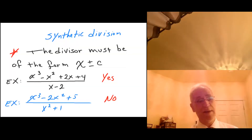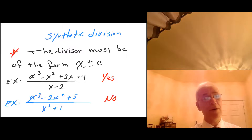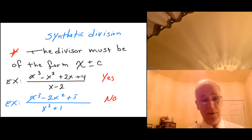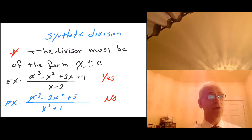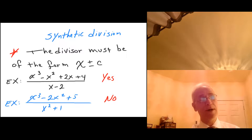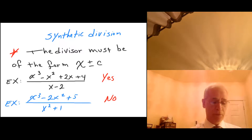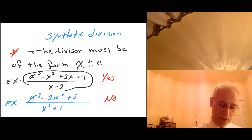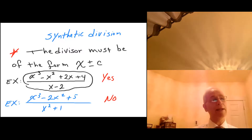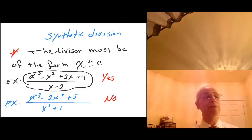Hello, I'm going to be talking about synthetic division, which is a form of long division. What we must remember for synthetic division is that the divisor or the denominator must be of the form x plus or minus some constant. For example, consider x cubed minus x squared plus 2x plus 4 divided by x minus 2. Can I use synthetic division and divide? And the answer is yes, I can.